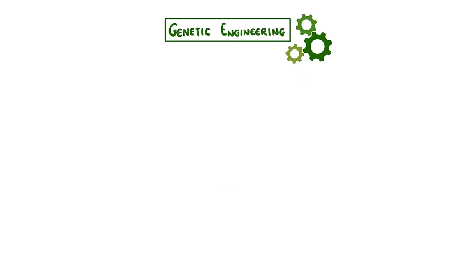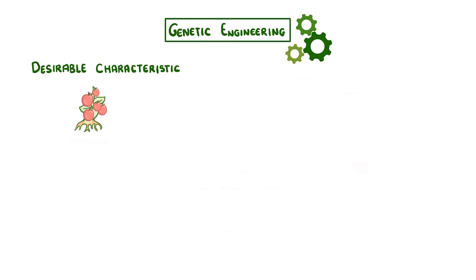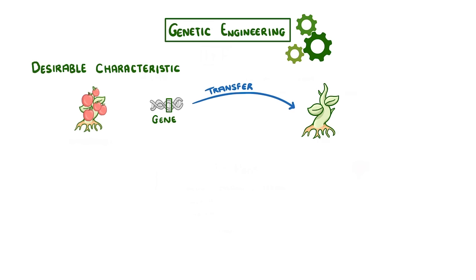Genetic engineering is one of those topics that can seem quite complicated at first, but it's really quite simple. The basic idea is that we find one organism that has a desirable characteristic, like a plant that has lots of big fruit. Then we take the gene that's responsible for that trait and transfer it to another organism so that this other organism develops the same trait.